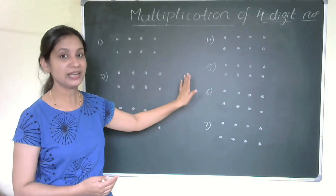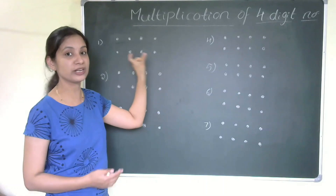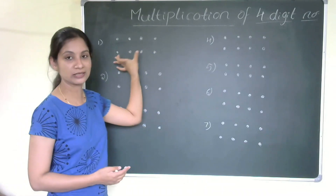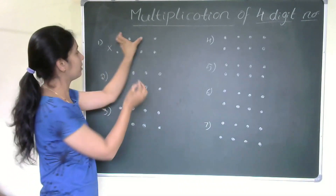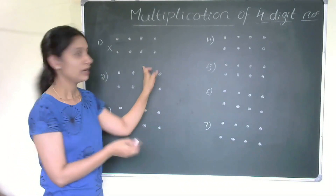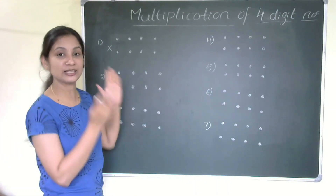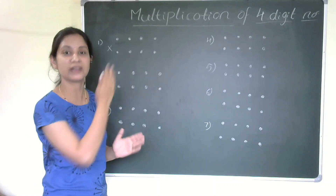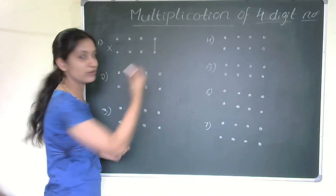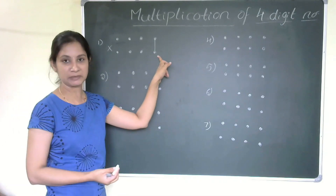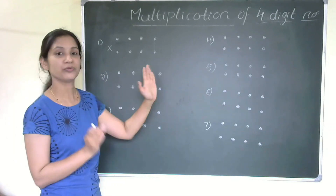In general, I have taken four dots to represent a four-digit number — here also four dots, another four-digit number. So we are multiplying a four-digit number by a four-digit number. Step one: as always, we start from the right-hand side and multiply the unit place values of both numbers.